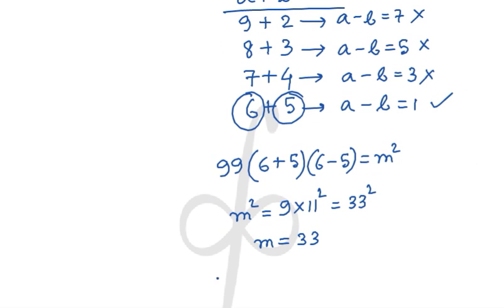So the final answer is coming out to be x + y + m is nothing but 11 times (a + b) that is 11 plus the value of m that is 33. So 121 + 33. So the final answer is going to be 154.